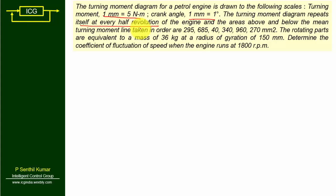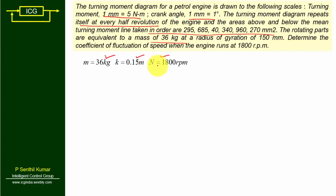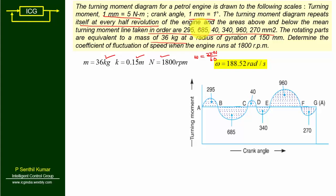The areas above and below the mean resisting torque line are given. The rotating parts have a mass of 36 kg, radius of gyration k = 0.15 m, and speed of 1800 rpm. Since n is given, omega = 2πn/60, so omega = 188.52 rad/s. Now let us draw the turning moment diagram from the problem. The diagram repeats at every half revolution in a sine wave format, with area values of 295, 685, 40, and 270 mm².